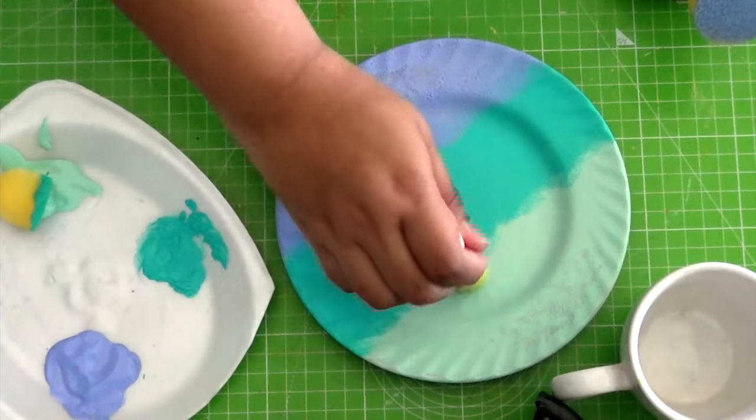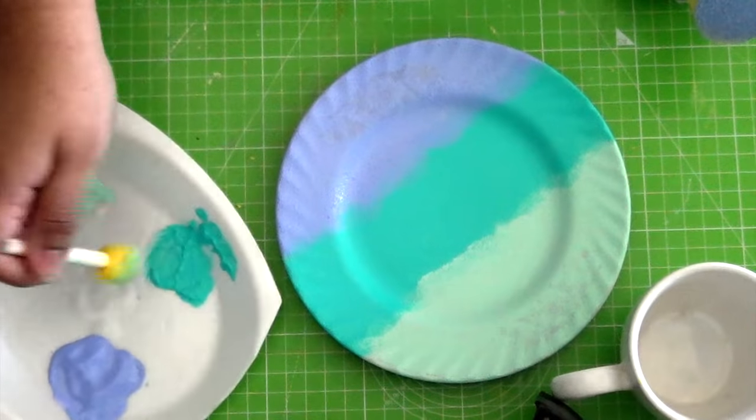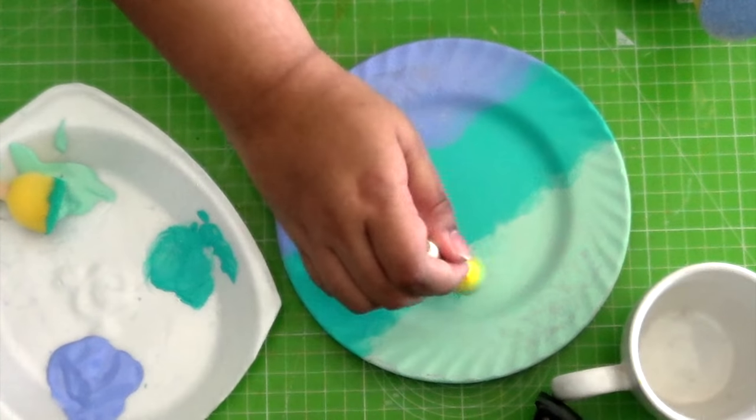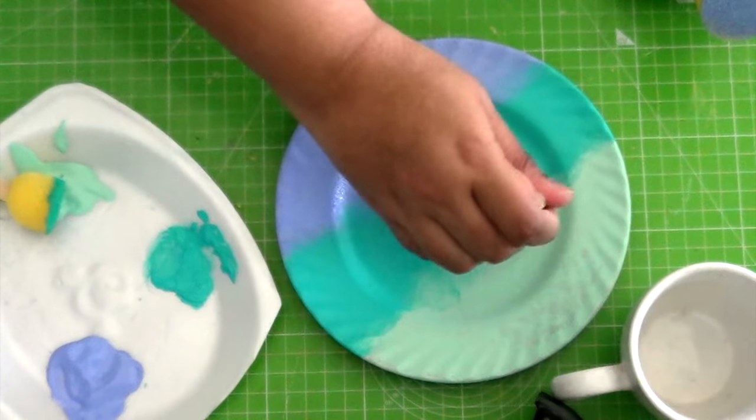Once all the sections have been painted, take the darker of the two shades and start dabbing it along the edge of the lighter shade.